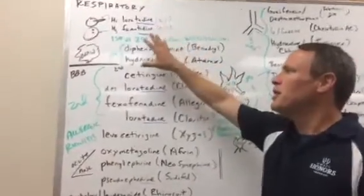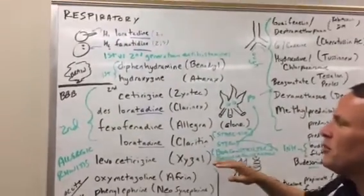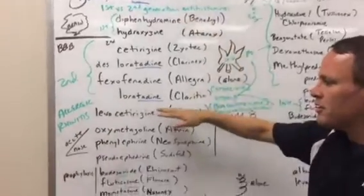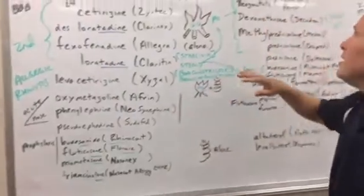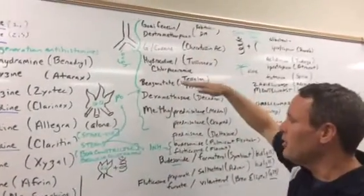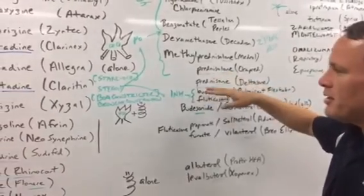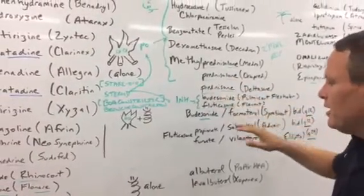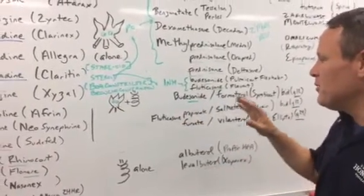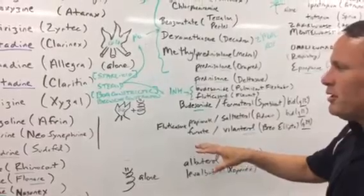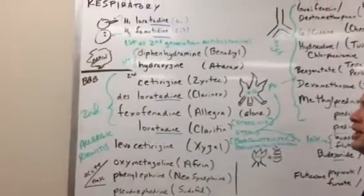So for respiratory, before we get into any of the medications, the medications we'll go through will be the antihistamines, allergic rhinitis, decongestant, and then we'll talk a little bit about cough, steroids and inflammation, bronchoconstriction, asthma, COPD. We'll talk about and explain all these drawings later, but that we can treat bronchoconstriction alone or inflammation alone.